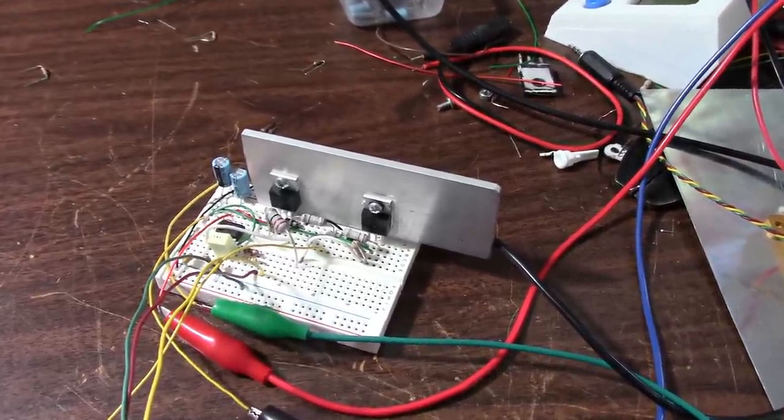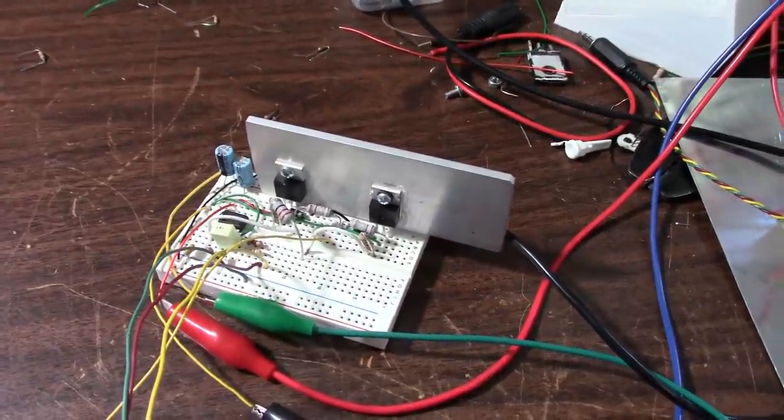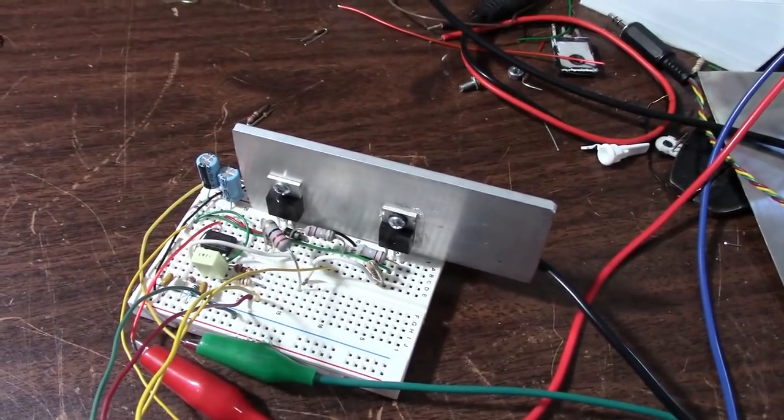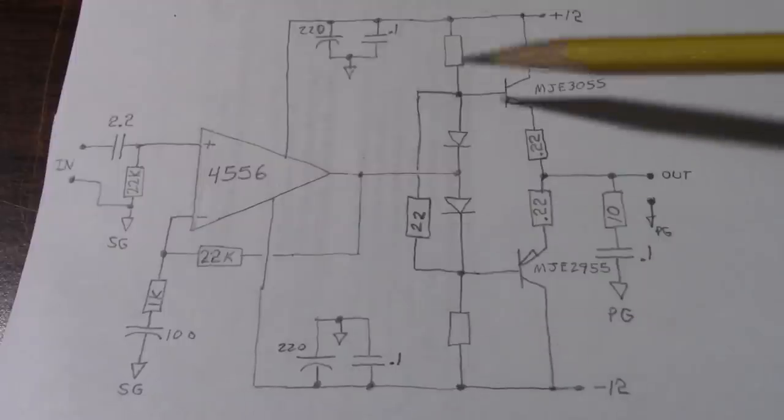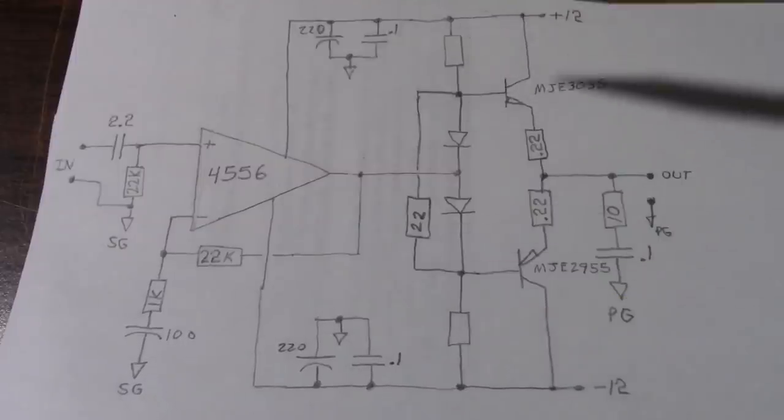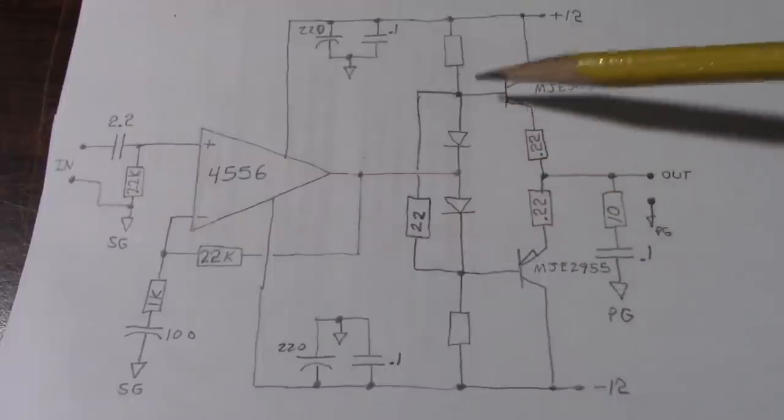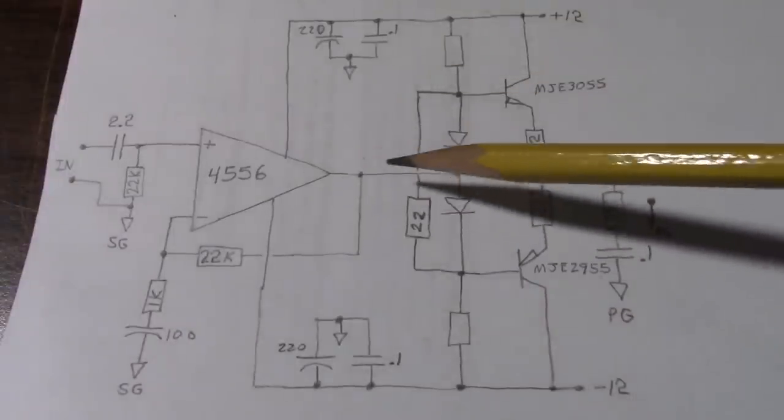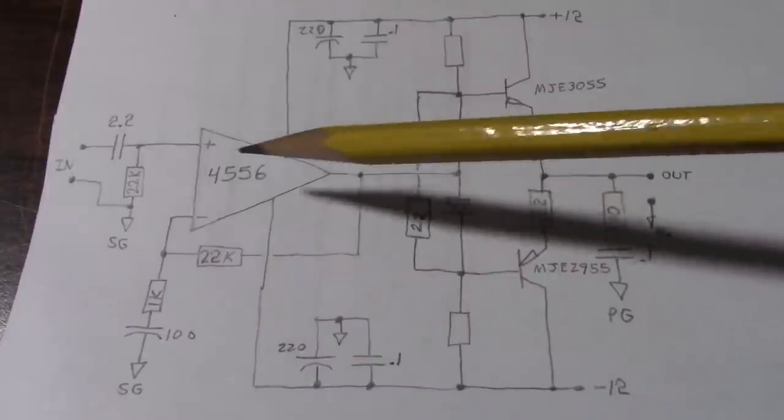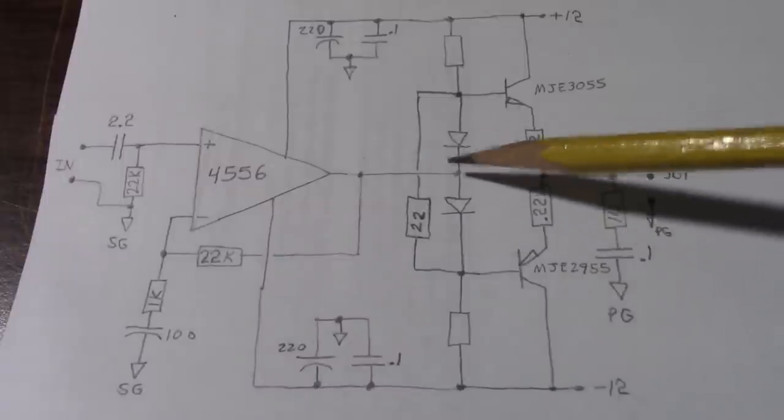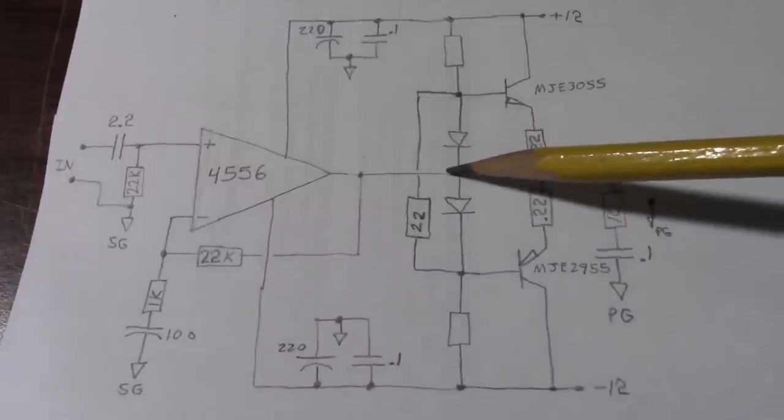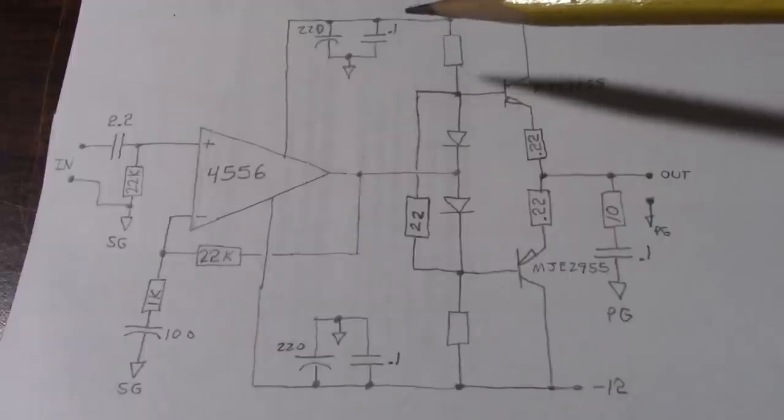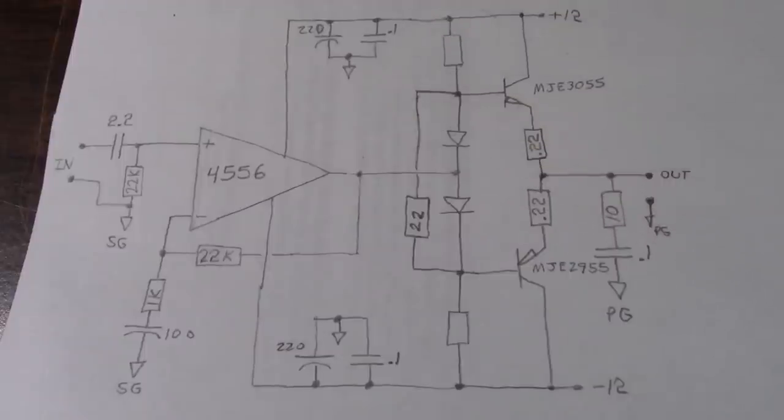Now with plus and minus 12 volt rails I would expect to do better than that. I would expect somewhere around 10 watts. Where's half my power? You know it's like giving somebody ten dollars and only getting five of something back. So not so good, I would like to do a little better than that.